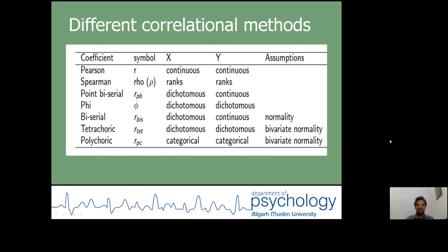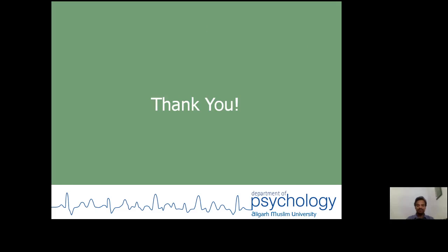To revisit our discussion, if you go to the tetrachoric correlation, both variables x and y are required to be dichotomous, but the assumption is both variables are to be normally distributed. Thank you.